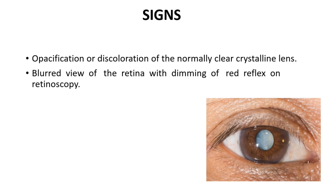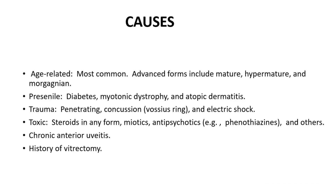Signs include opacification or discoloration of the normally clear crystalline lens, blurred view of the retina with dimming of the red reflex on retinoscopy. Causes: age-related is the most common; advanced forms include mature, hypermature, and Morgagnian. Pre-senile causes include diabetes, myotonic dystrophy, and atopic dermatitis.